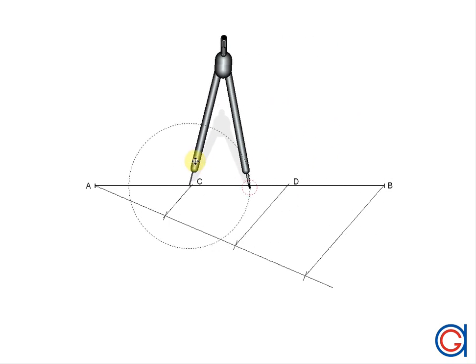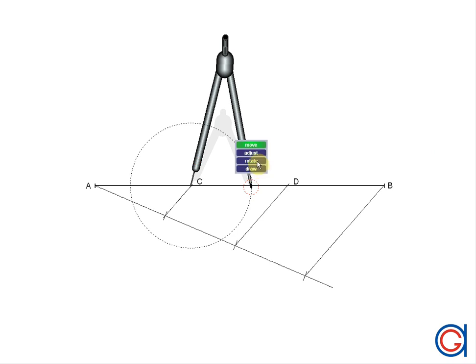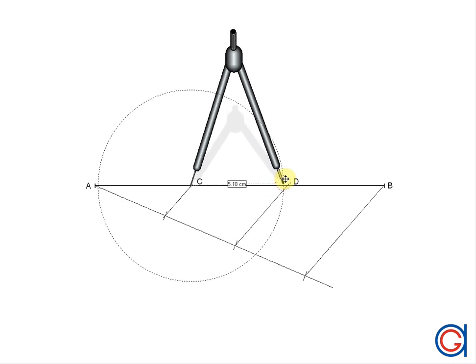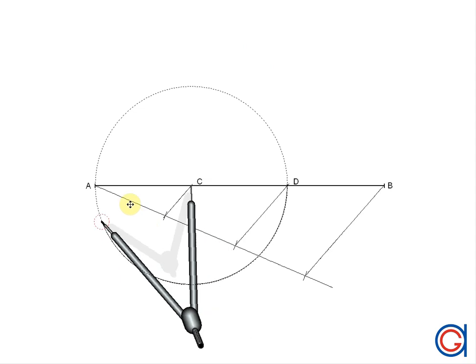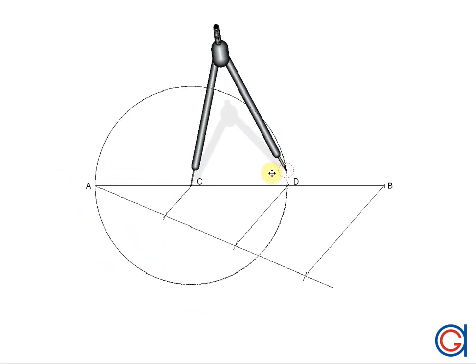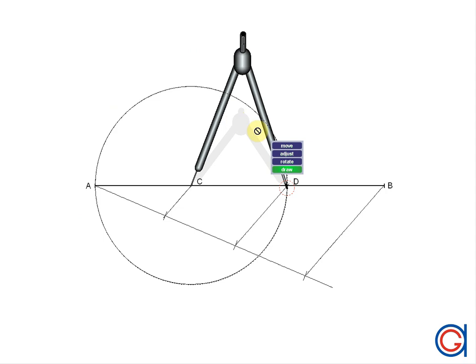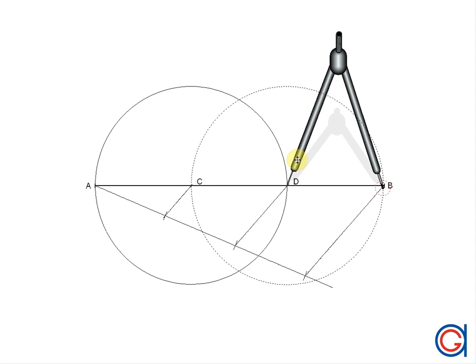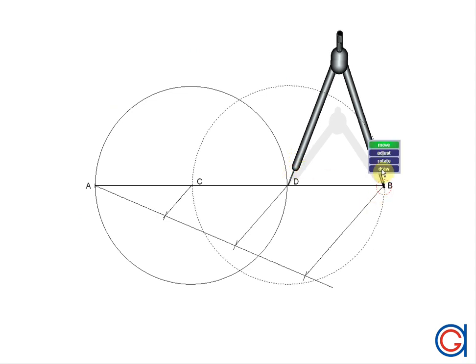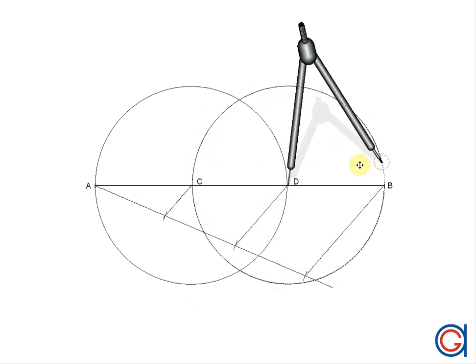So the next step is we are going to draw two circles centered on the points C and D with a radius AC for both circles. Now with our compass set on point C and radius AC we will draw our first circle. And now setting our compass on point D with the same radius we will draw our second circle. These two circles intersect at two new points which we will call E and F.